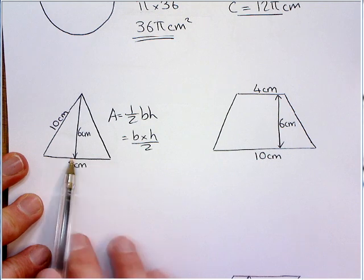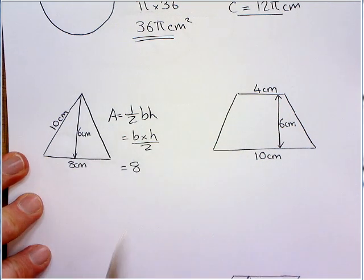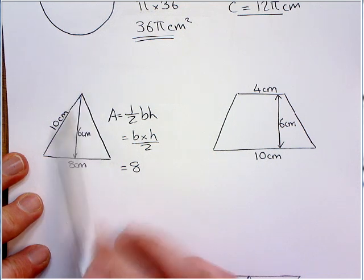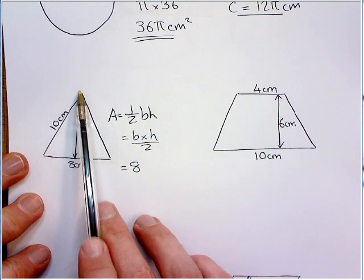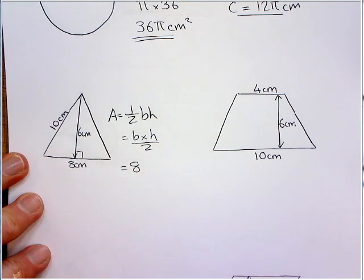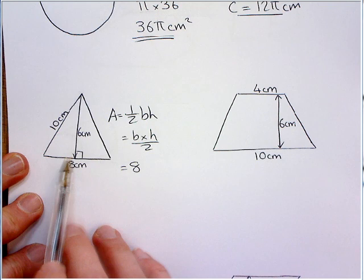So, the base is quite obvious, that's going to be 8. But what is the height? They can add this in to confuse you, but this is the slanted length here. The height, if you imagine you measure your height, you stand up straight, at right angles to the ground. So, the height is always a perpendicular height.